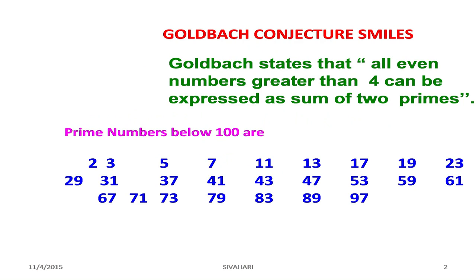Prime numbers below 100 are 2, 3, 5, 7, 11, etc., up to 97.